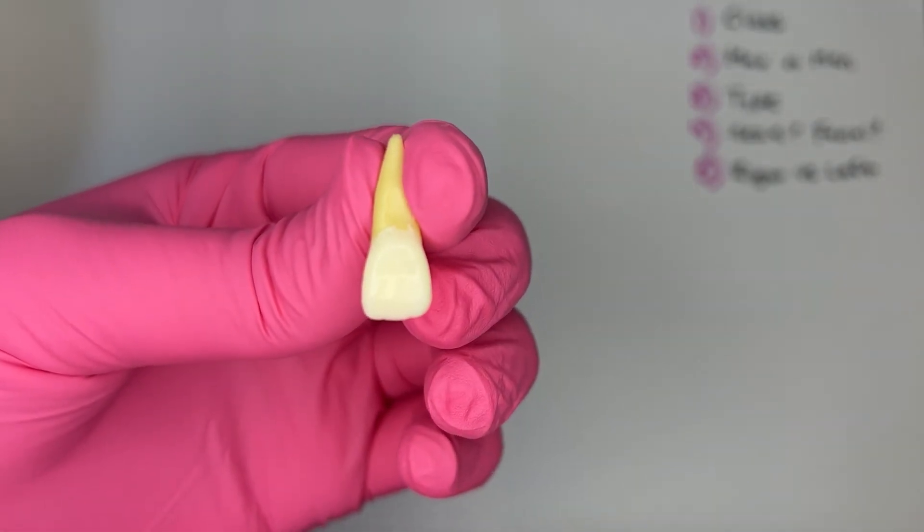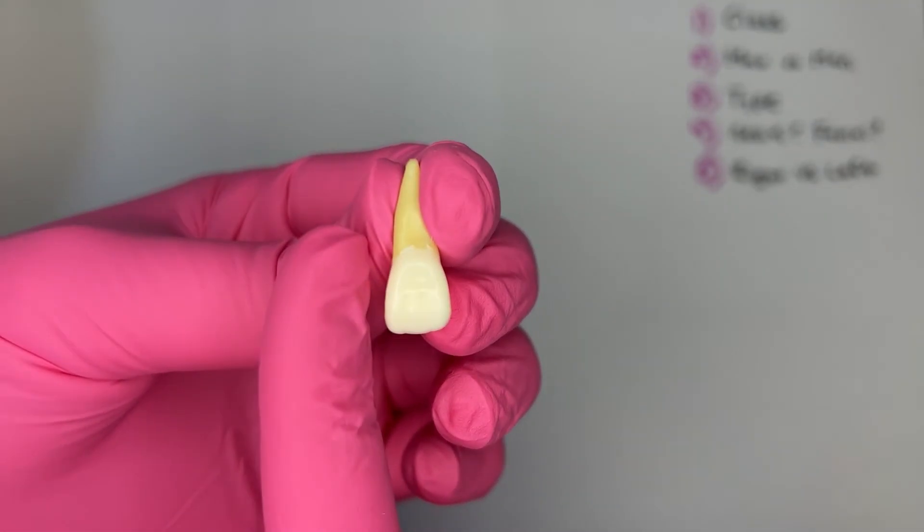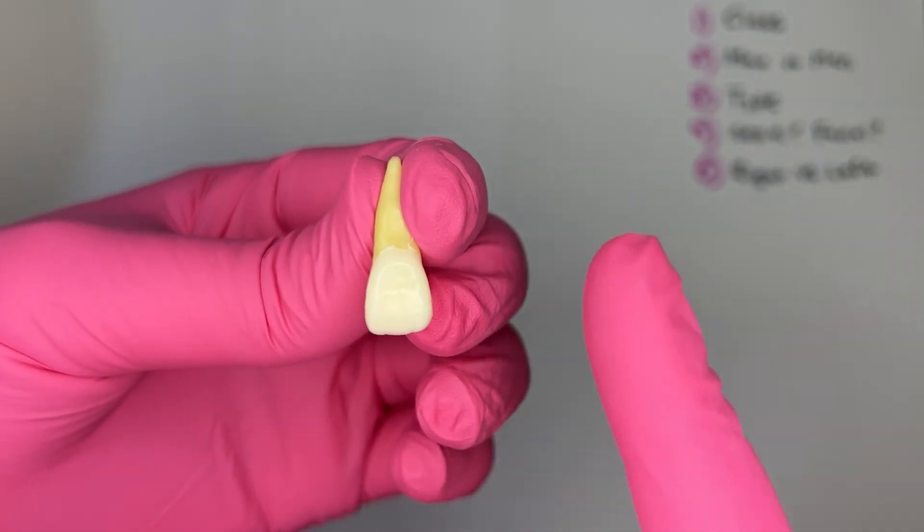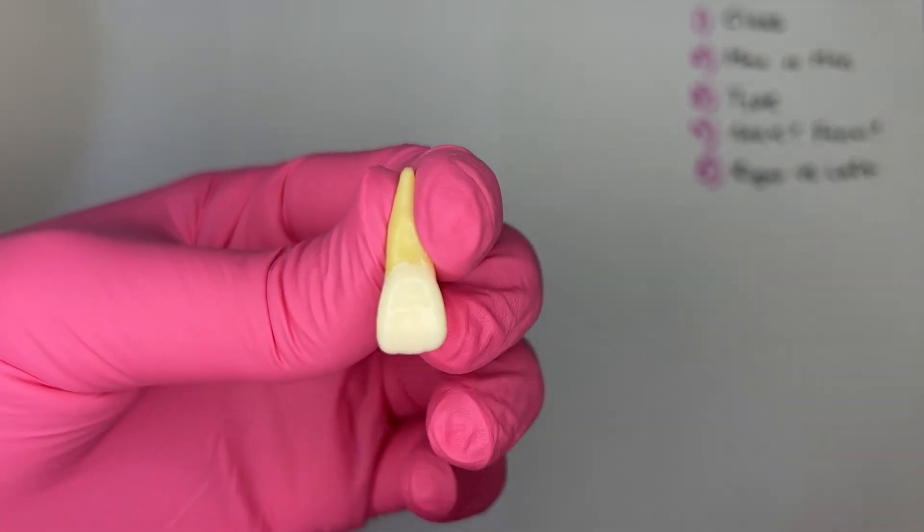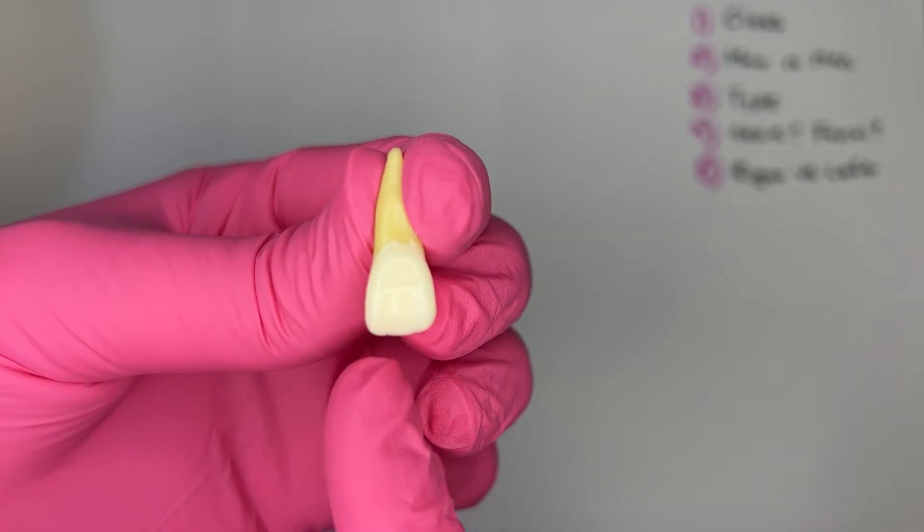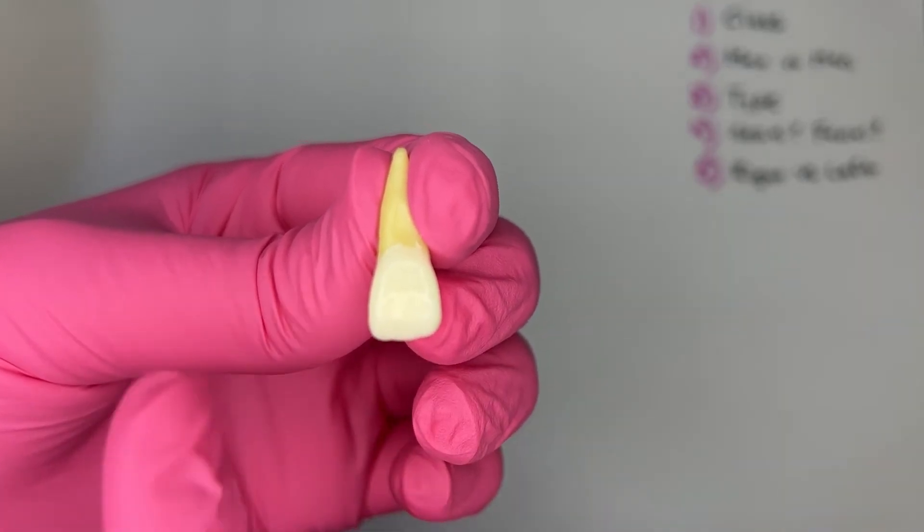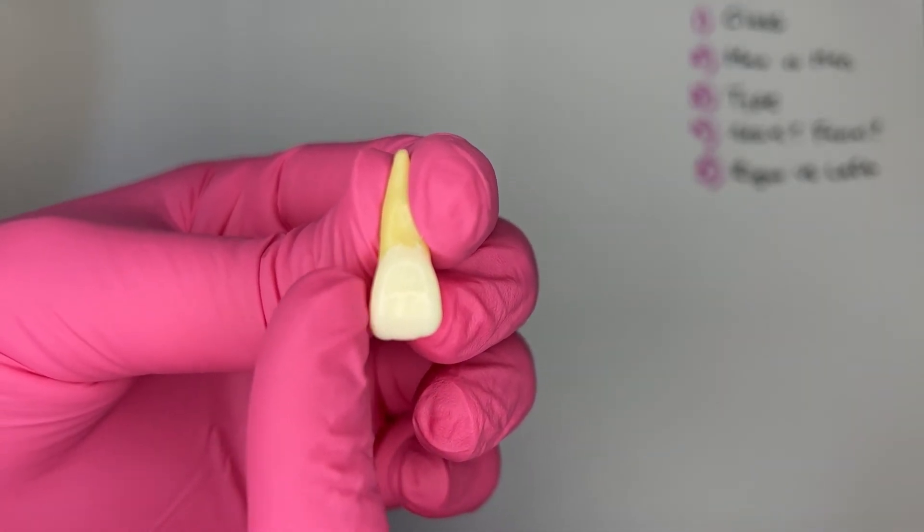With the facial facing me, the mesial outline is more straight than the distal outline and the mesial incisal angle is sharper than the distal incisal angle. So I know that this side is the mesial.